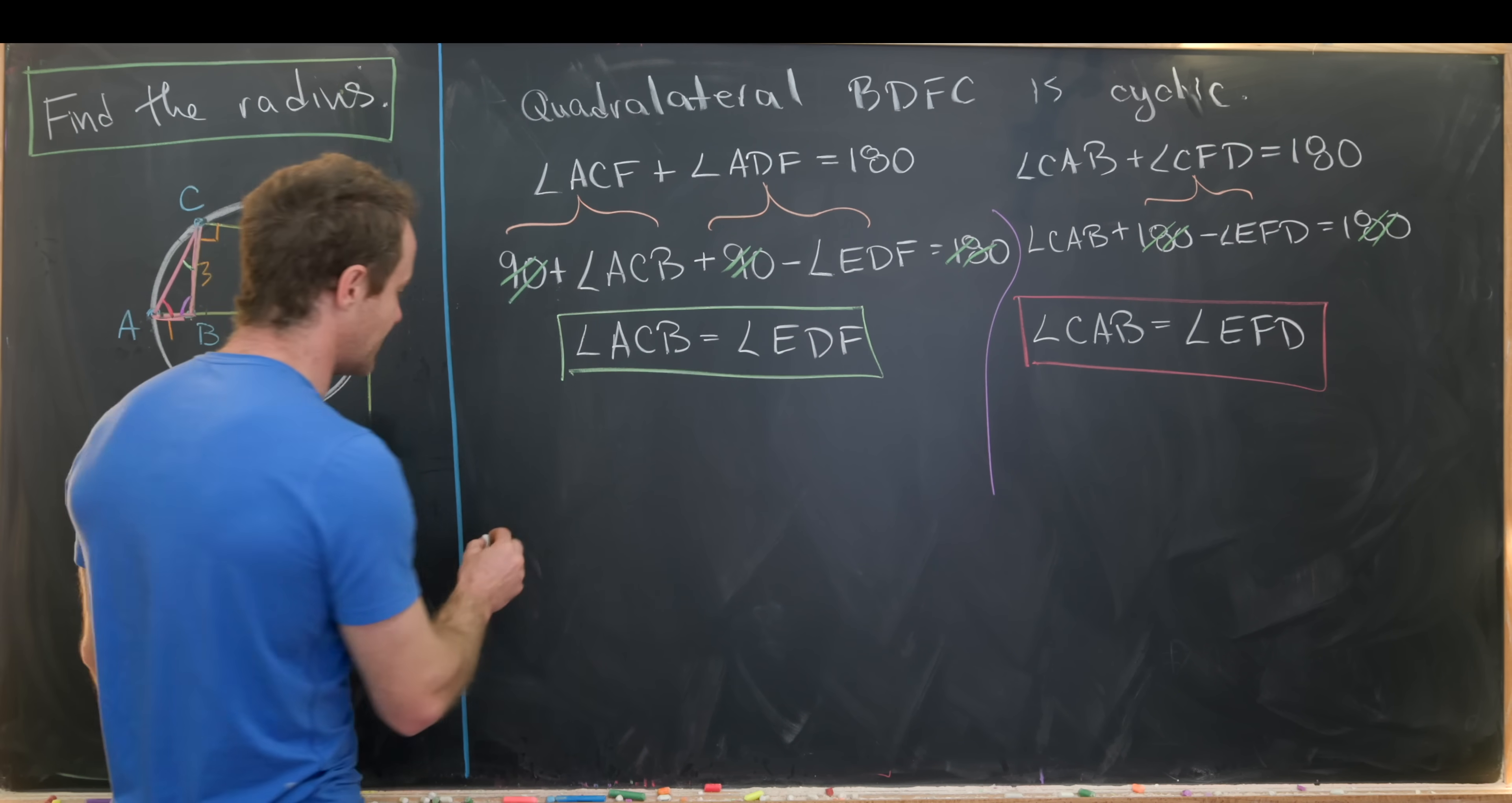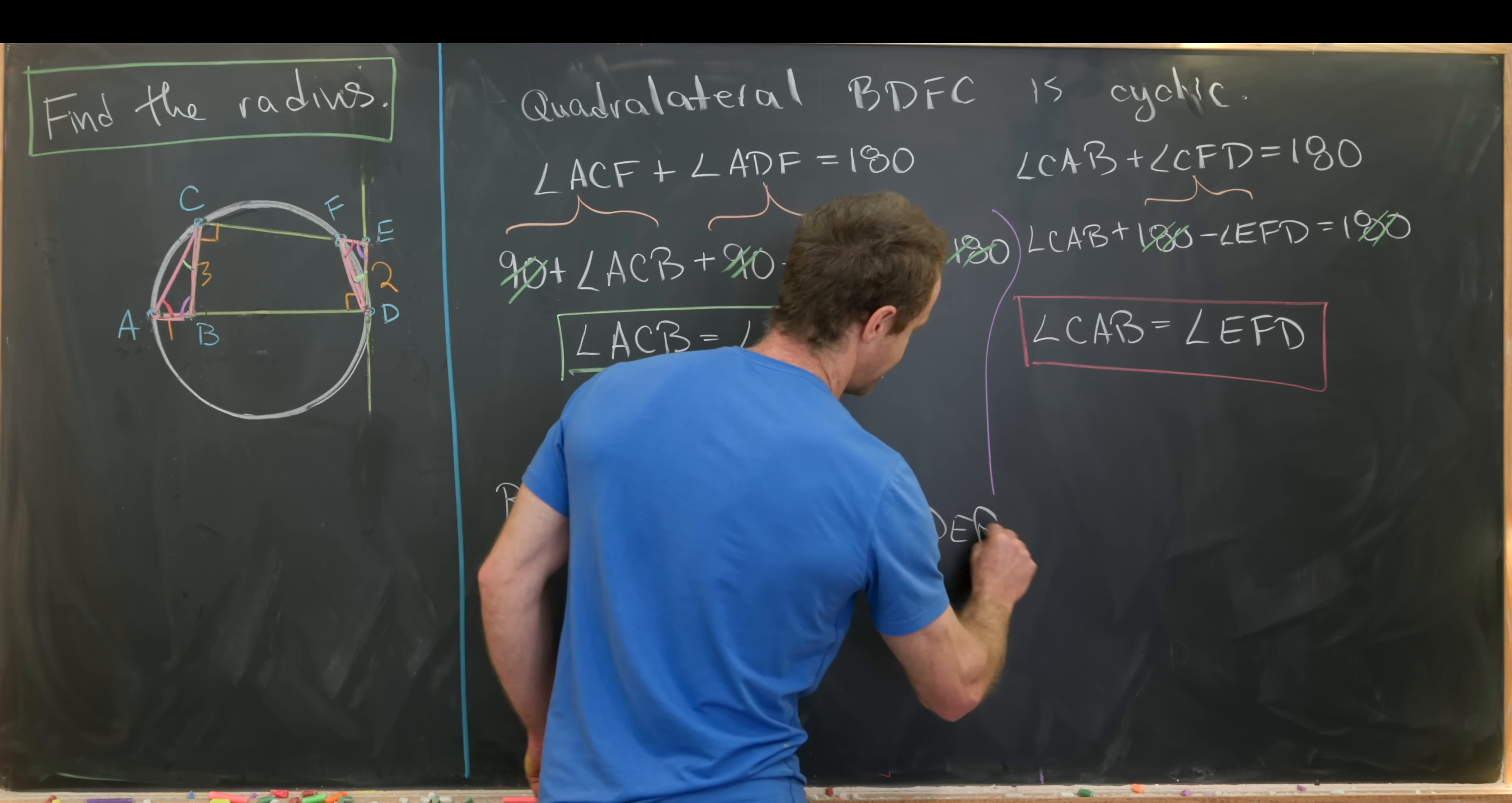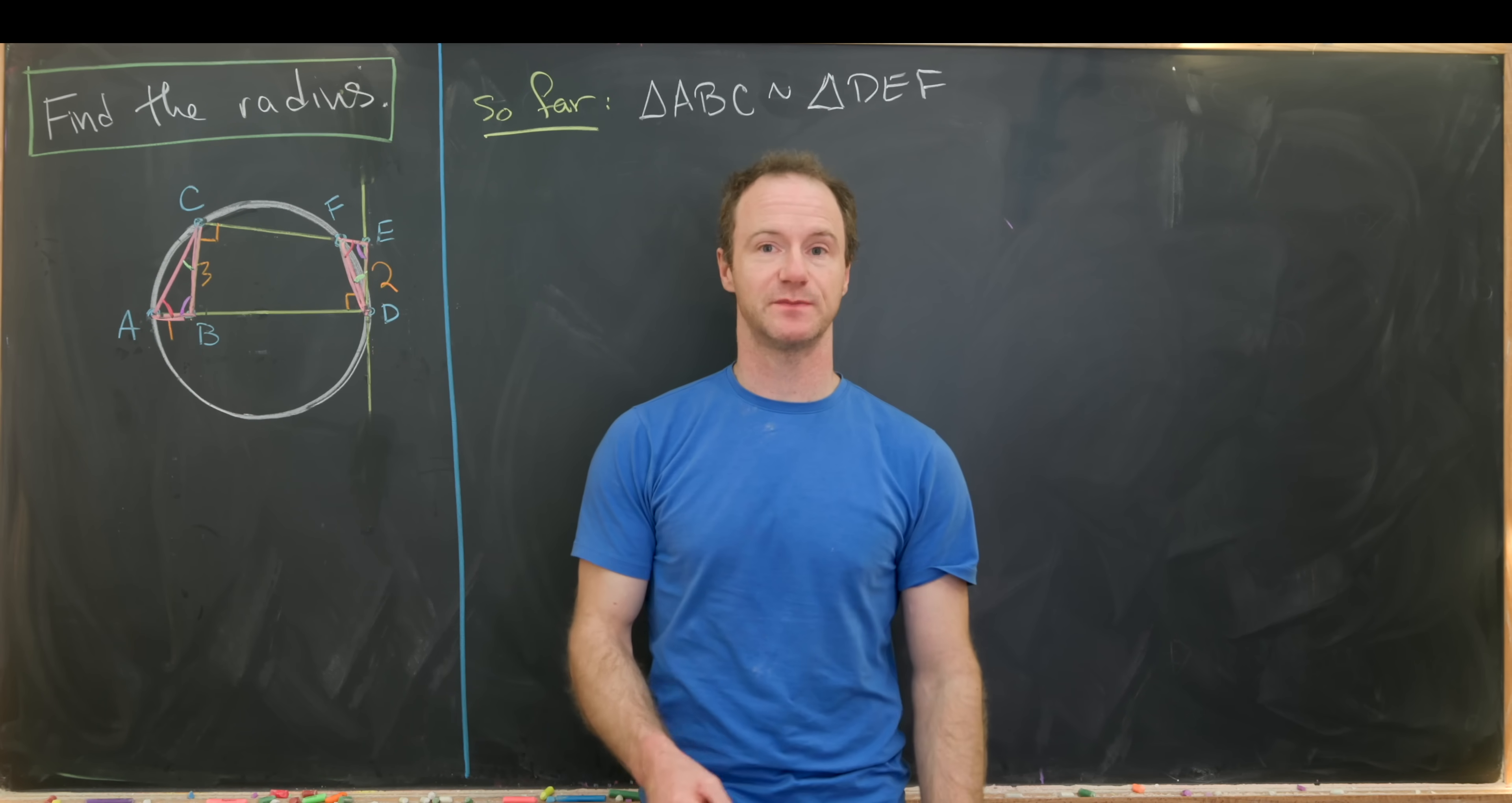But then putting that all together by the angle, angle, angle formula, we know that triangle ABC is similar to triangle DEF. So that's a good first fact to work with. And so let's maybe bring that to the top and then we'll finish it off.